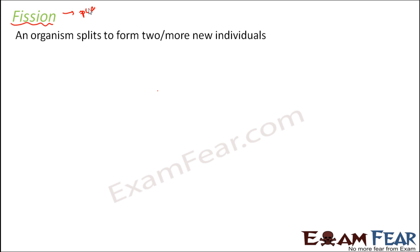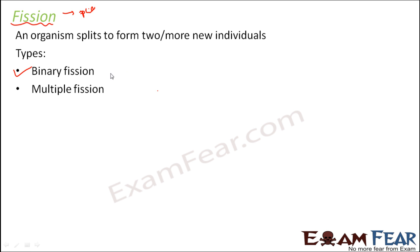Let us start with fission. The term fission means to split — the parent organism splits to form two or more new individuals. This splitting can occur in a variety of ways. Broadly there are two types: binary fission, where the parent organism divides into two daughter individuals, and multiple fission, where the parent organism divides into multiple daughter individuals.